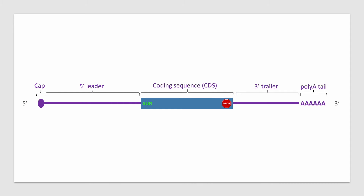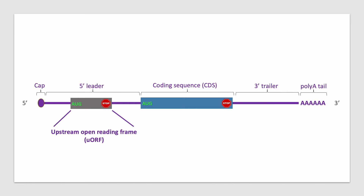But what happens if the scanning ribosome encounters a start codon before it gets to the main coding sequence of the mRNA? This is known as an upstream open reading frame, or UORF. Some UORFs get translated and can regulate translation of the main coding sequence. Whether they get translated or not influences the likelihood of the main coding sequence being translated.